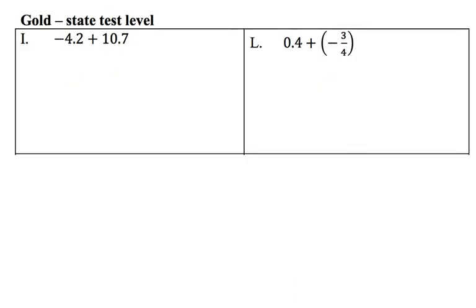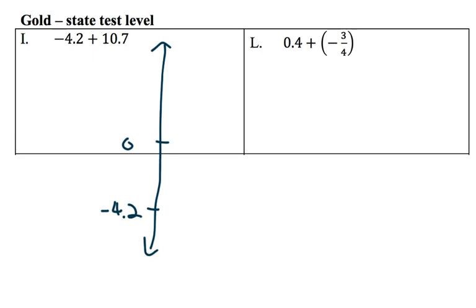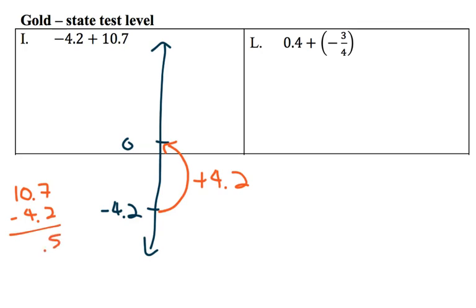Same idea here. For the problem negative 4.2, that tells me I'm starting below zero in the basement, so I do negative 4.2. Then we're adding 10.7, so I know we're going to go up 10 and 7 tenths. That's more than 4.2, so first let's go up by that to get to zero. Then to figure out what we have left to go up, I subtract: we have 6.5 left to go up. So that gets us to 6 and 5 tenths, which is our answer.